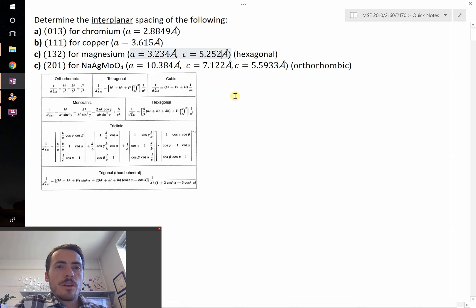Okay, this question says determine the interplanar spacing of the following, and it gives four different crystal structures. Each one of these has a different HKL plane that we'd like to figure out the interplanar spacings for. So interplanar spacing, what does that even refer to?